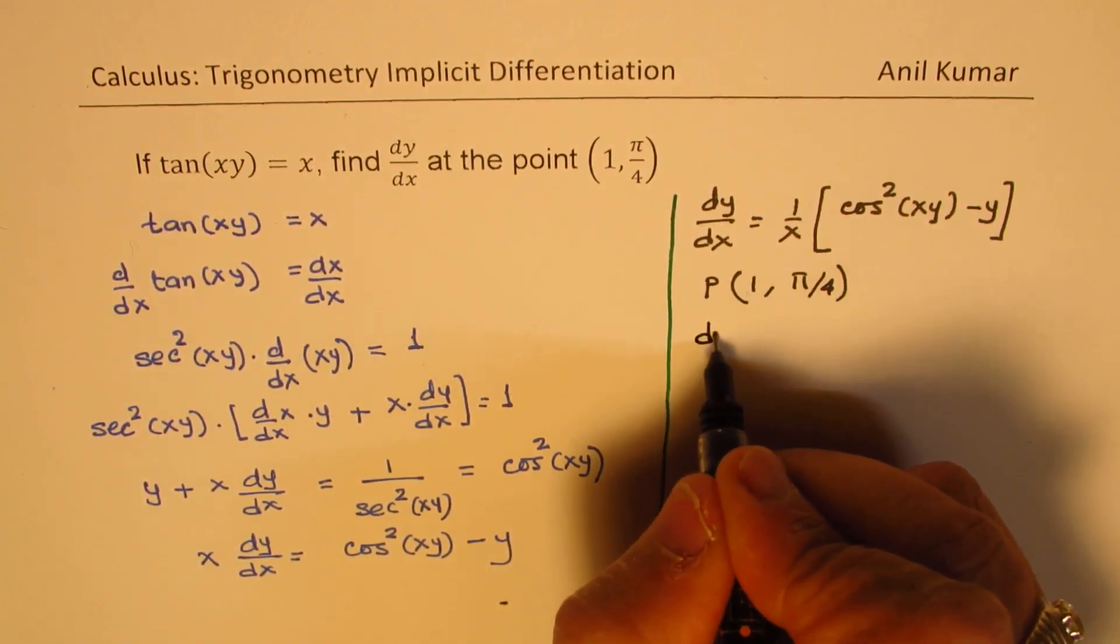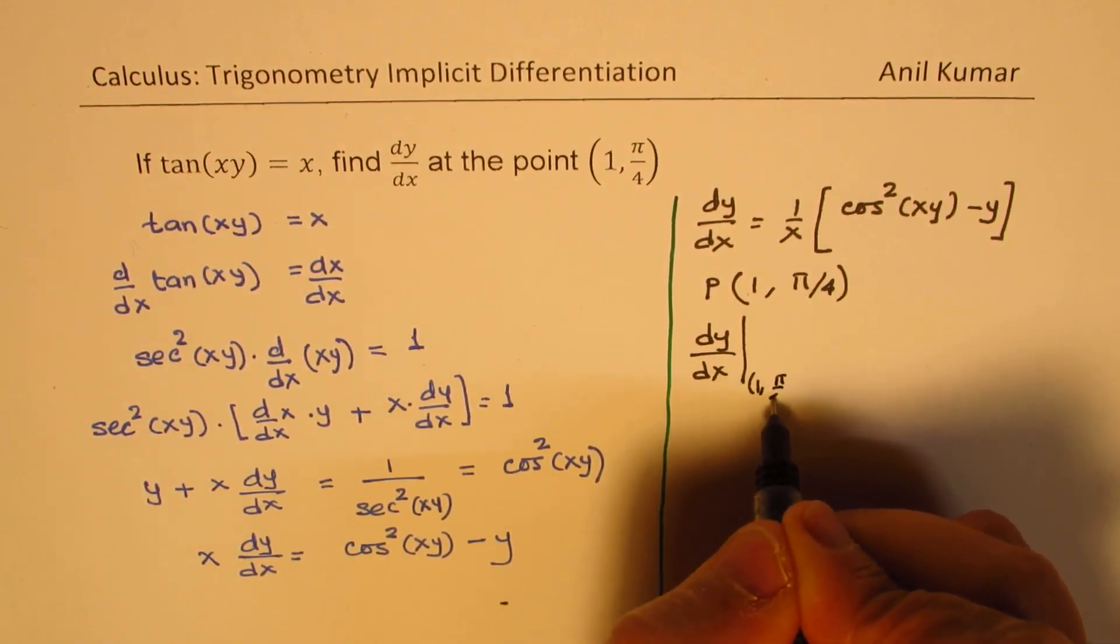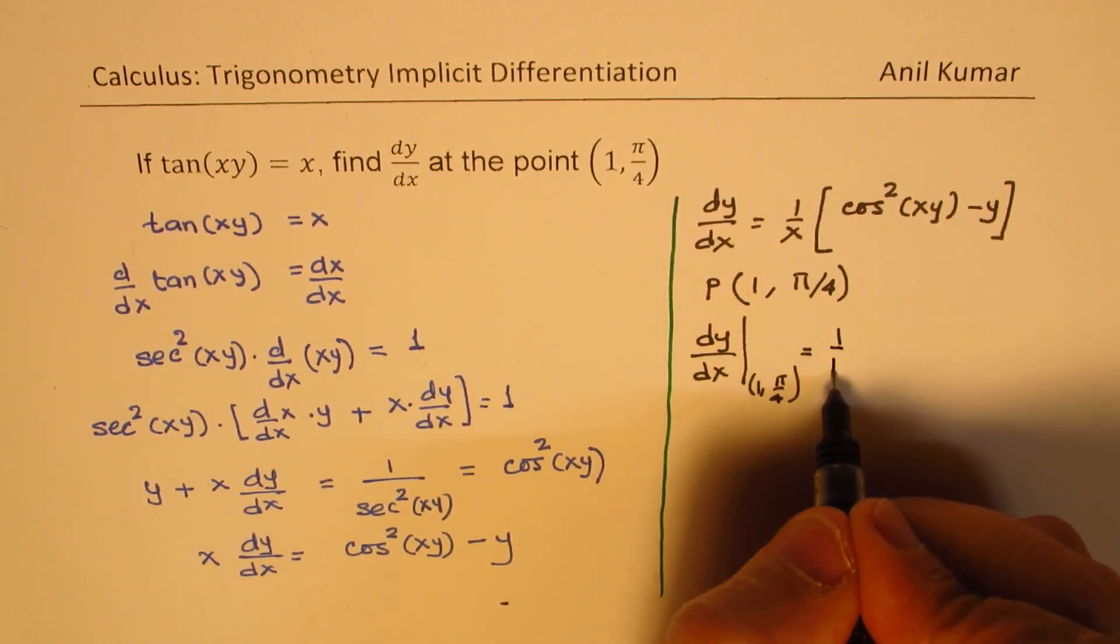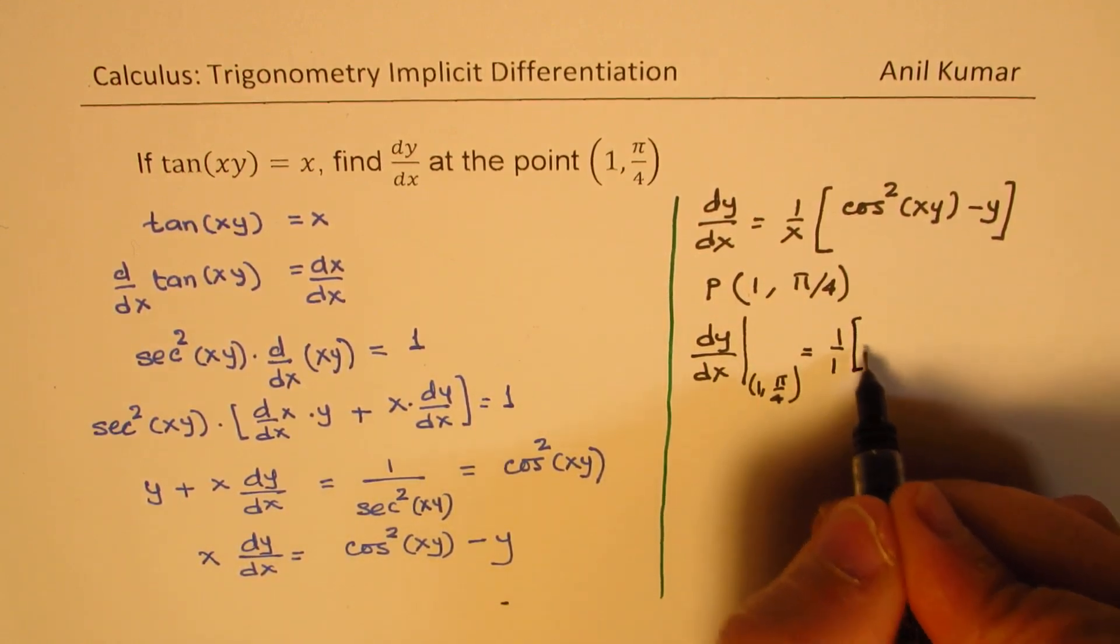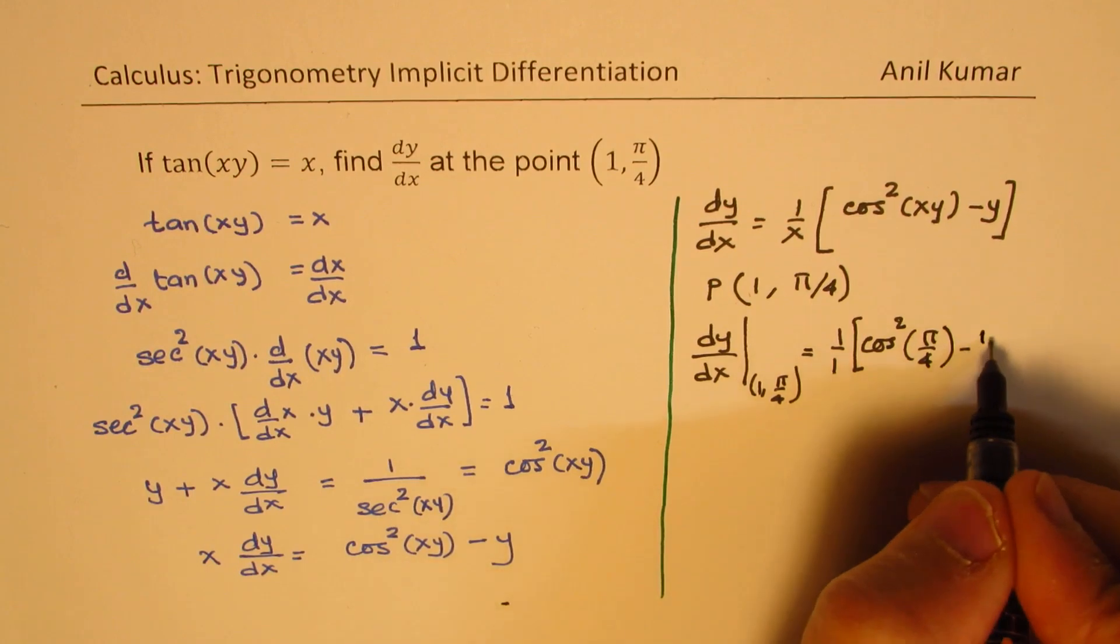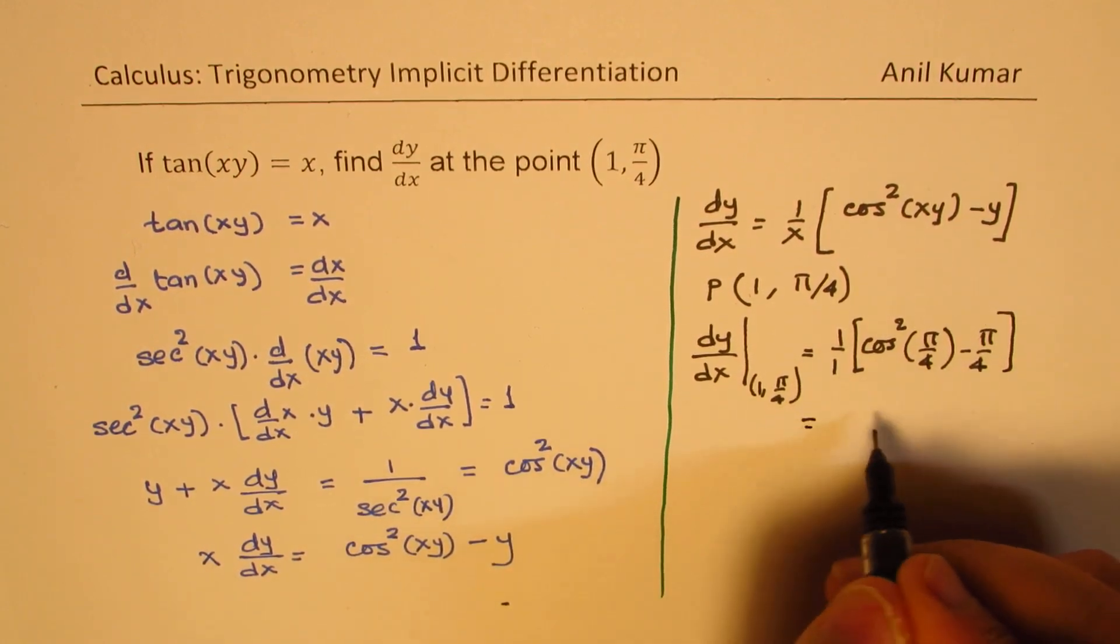x is 1, so we get 1 over 1, which is 1, and here we get cos² of 1 times π/4 minus y, which is π/4.